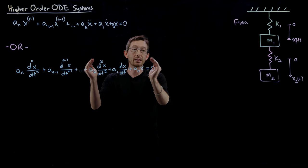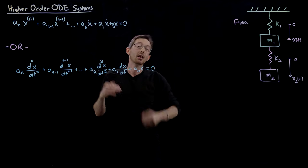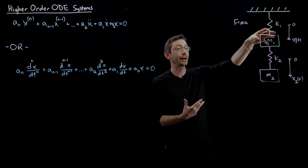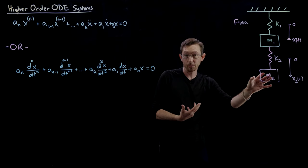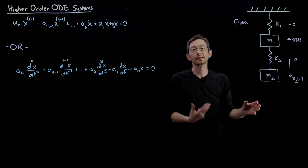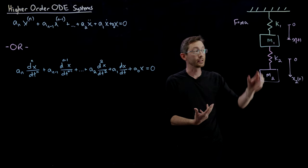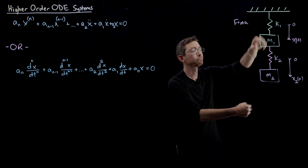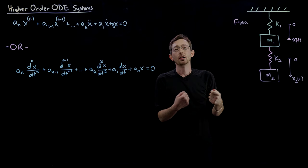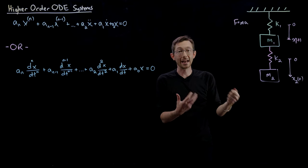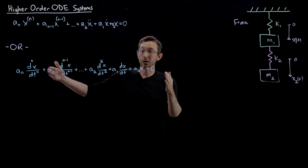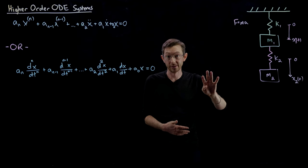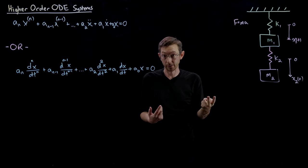So we've been solving a lot of systems like this. But in the last lecture, I showed you that if you add another spring-mass system so that you have a more complicated physical system, it's possible to obtain a differential equation that now has fourth derivatives instead of just second derivatives.